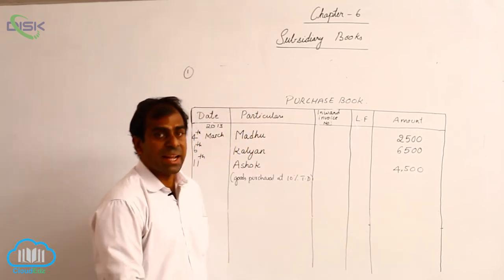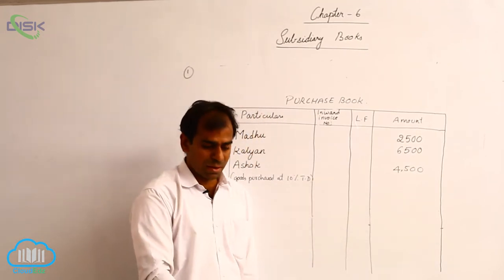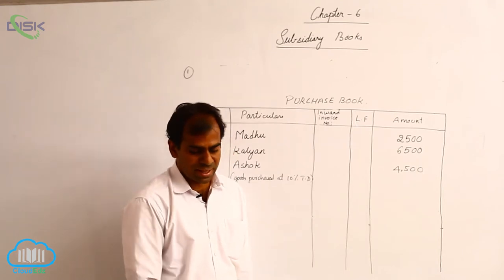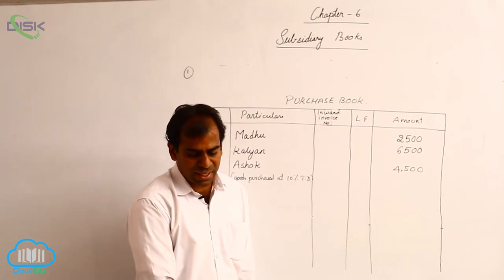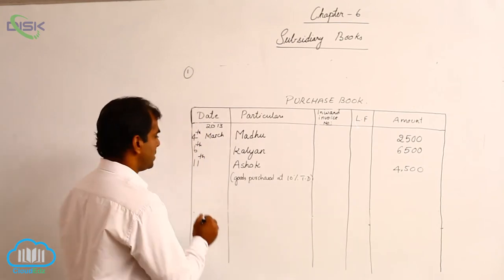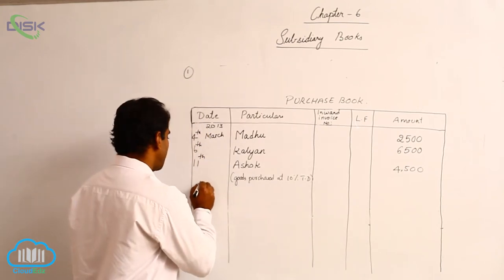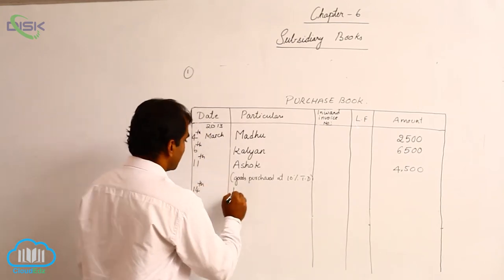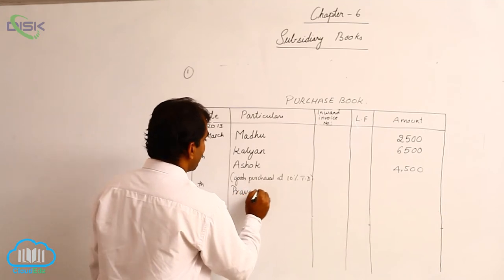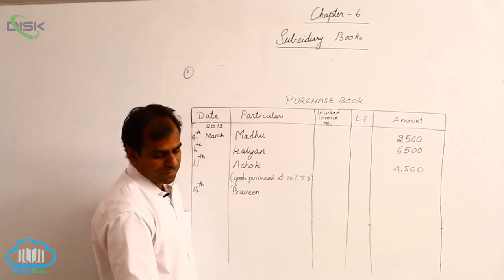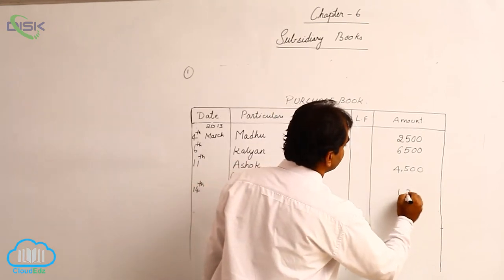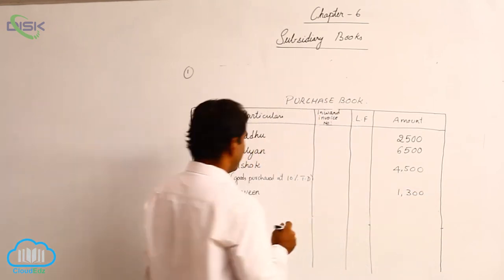The next transaction is on 14th March, which states that purchased goods from Praveen, 1,300. Simply give the date 14th March, enter the name of Praveen, and record the amount of 1,300 in the amount column.